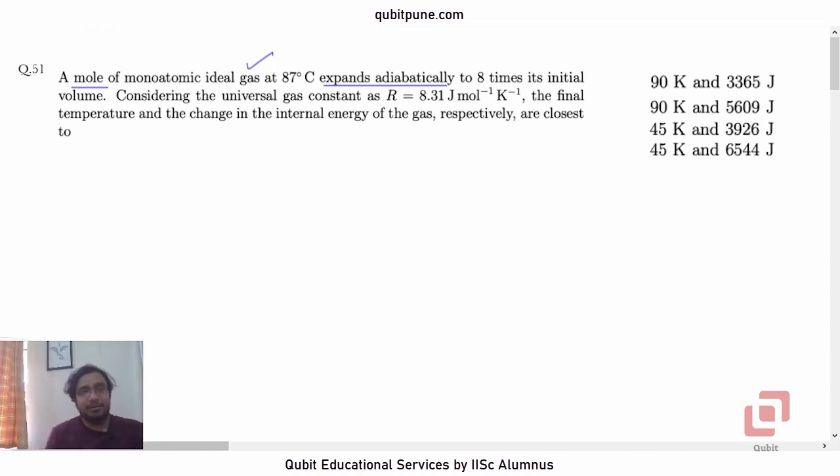So number of moles is 1, in usual notation n = 1. Initial temperature T1 is 87 degrees Celsius, so in Kelvin that's 87 plus 273 which equals 360 Kelvin. Eight times its initial volume, so V2 = 8V1. Considering the universal gas constant as given, 8.31 joule per mole Kelvin.